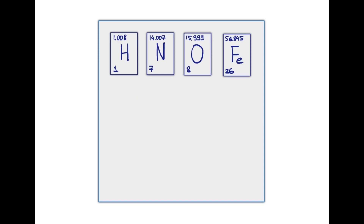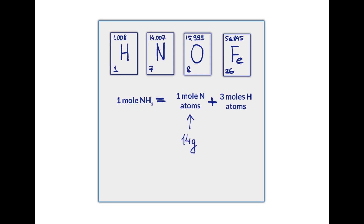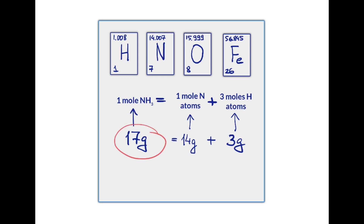We know that the average atomic mass of elements, when expressed in grams, reports the mass of 1 mole of those atoms. One mole of ammonia is made out of 1 mole of nitrogen atoms and 3 moles of hydrogen atoms. The mass of 1 mole of nitrogen atoms is 14 grams (rounded), and the mass of 1 mole of hydrogen atoms is 1 gram, so 3 moles of hydrogen is 3 grams. The mass of 1 mole of NH₃ equals 14 grams plus 3 grams = 17 grams. This is the molar mass, also known as gram formula mass.